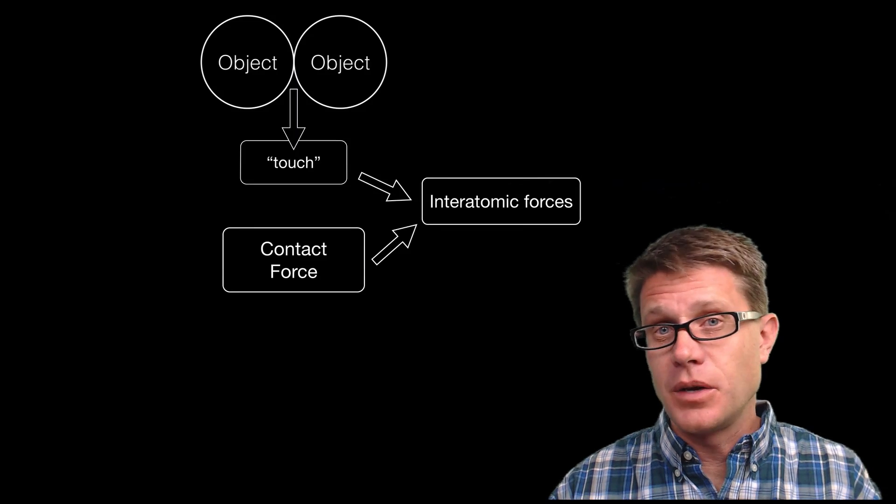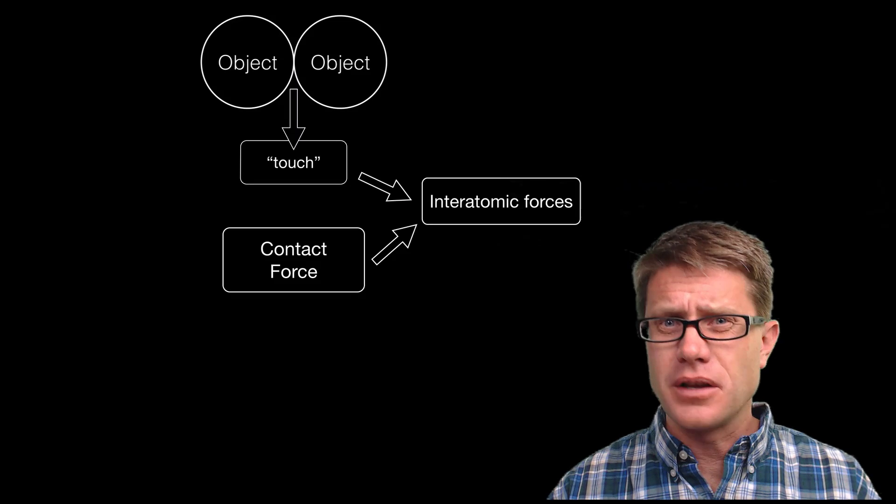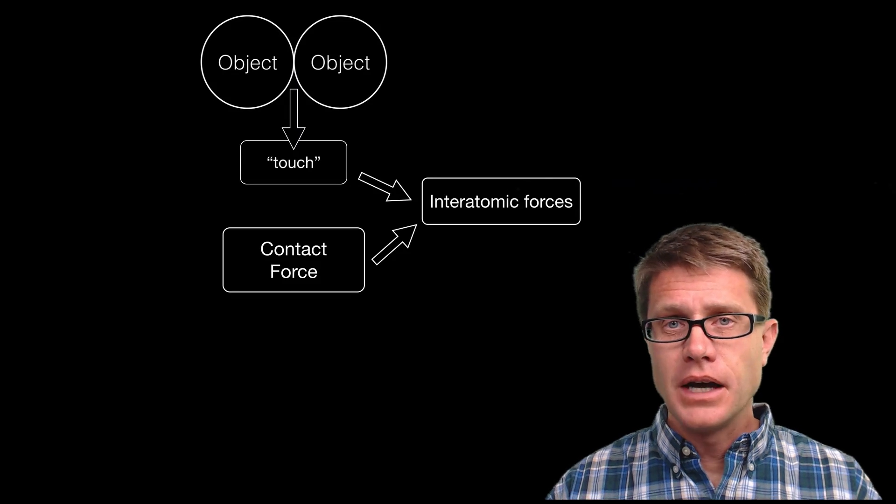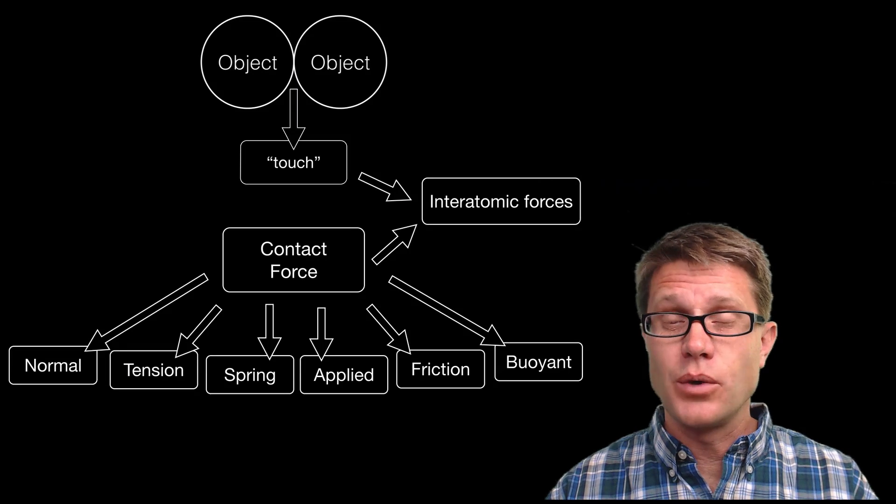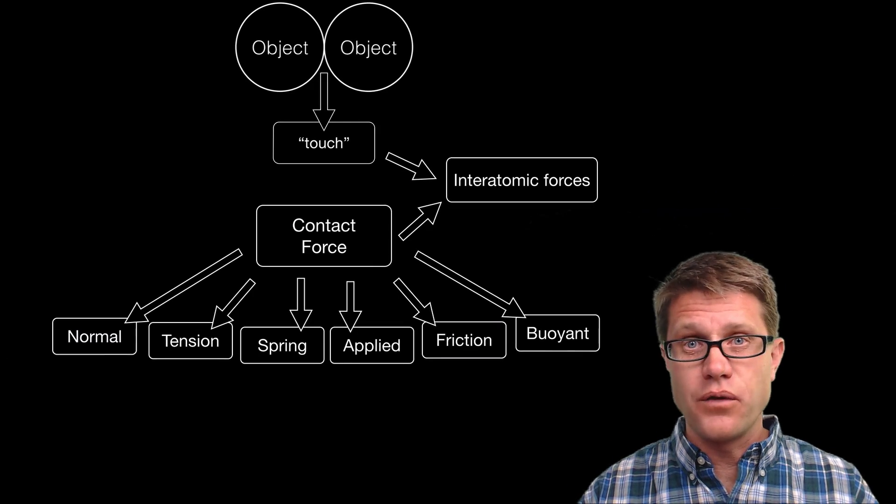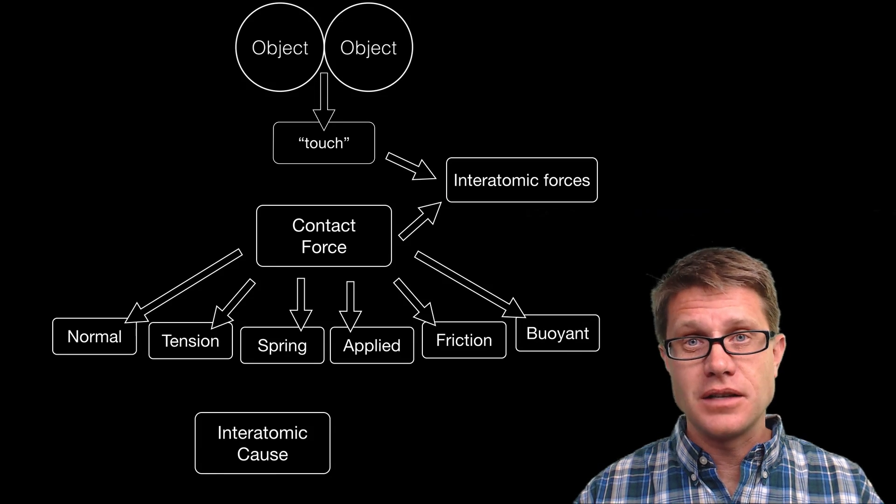And what is causing that is interatomic interactions or forces between the atoms themselves. And I have got a model that will make this a little bit more clear. And so the number of contact forces you should understand are these six. And with each of them you should understand what is the force, and then what is the interatomic cause or dependency of that force, and then what direction is it going to act in.